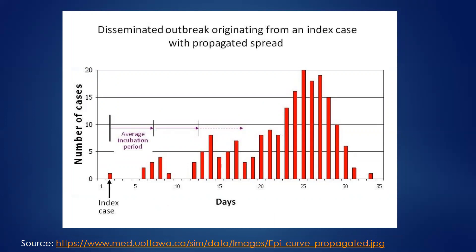Conversely, a propagated outbreak means you still start with an index case, but they spread it to others, and all of those people spread it to others, and so on. You tend to get these smaller curves initially and then really large spikes thereafter, with a much longer time period until the end of the outbreak — much longer than an average incubation period. We see that initial peak here, and if it stopped, we would call that point source. But then we see another peak at the second incubation period, and so on. This is clearly multiple cycles of infection spreading across a population.